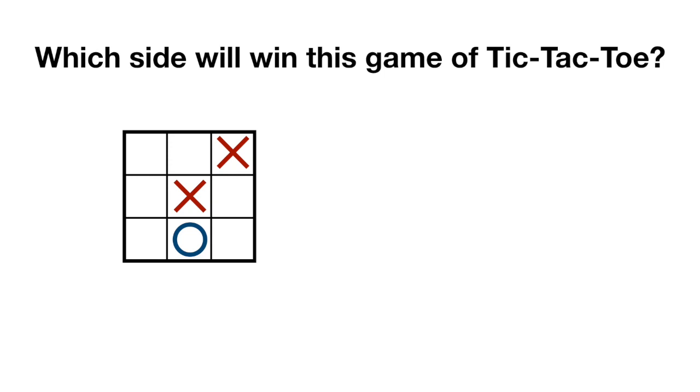The first thing to notice is that it must be O's turn, because X has already made two moves, and O has only claimed one square.